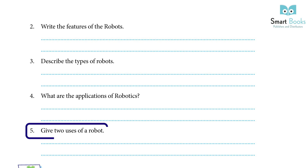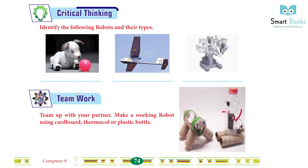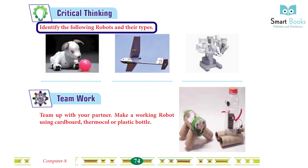Give two uses of a robot: Robots are used in disaster response for hazardous or dangerous duties. Robots are also widely used in manufacturing, assembly, and packing. Critical thinking: Identify the following robots and their types. Team activity: Team up with your partner and make a working robot using cardboard, thermocol, or a plastic bottle.